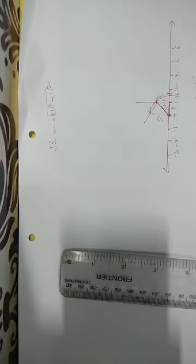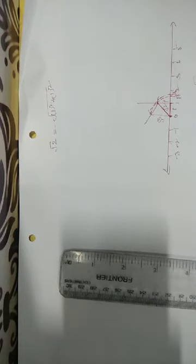This point is root 3. Similarly, you can construct root 4, root 5, root 6 using the same method with a protractor and compass.